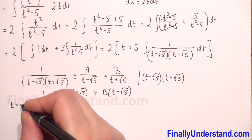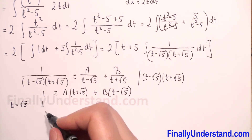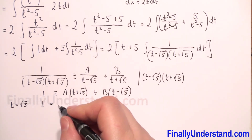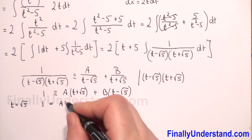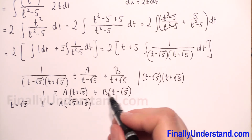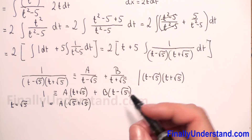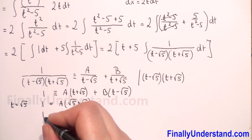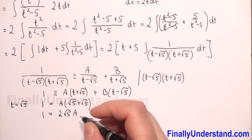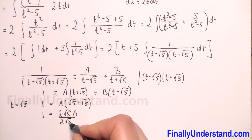I put t equal to square root of 5. On the left side we always have 1. When I substitute t equals square root of 5, I get A times (square root of 5 plus square root of 5), and the second term is 0 because square root of 5 minus square root of 5 equals 0, and 0 times B is 0. So we have 1 equals 2 square root of 5 times A. Dividing both sides by 2 square root of 5 gives us A.